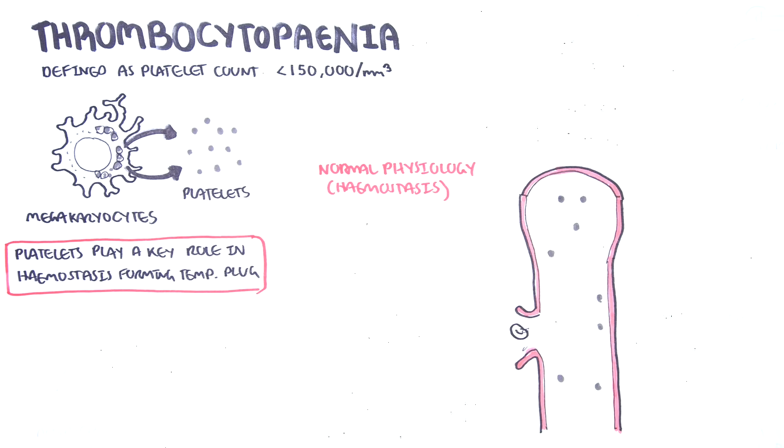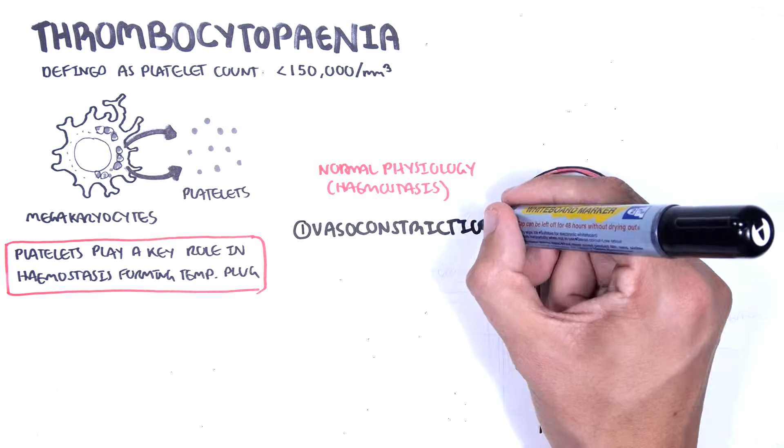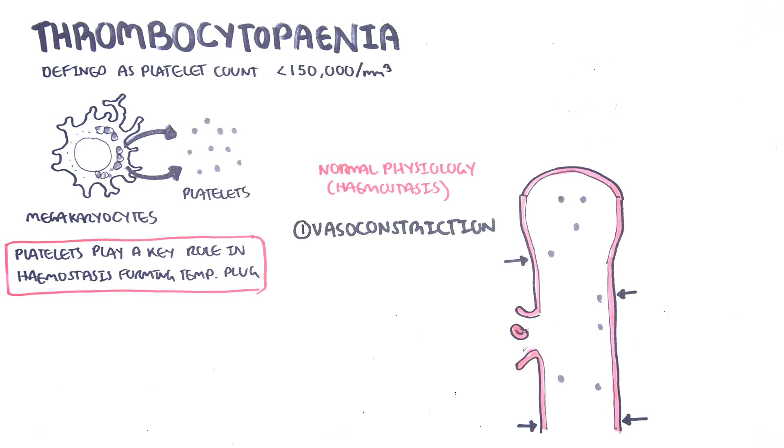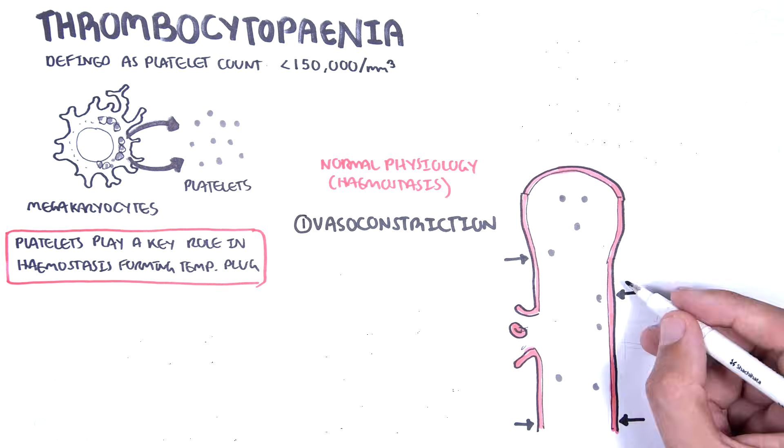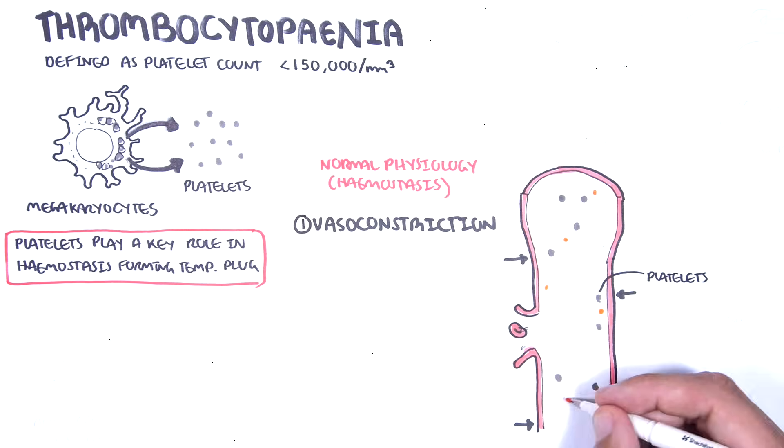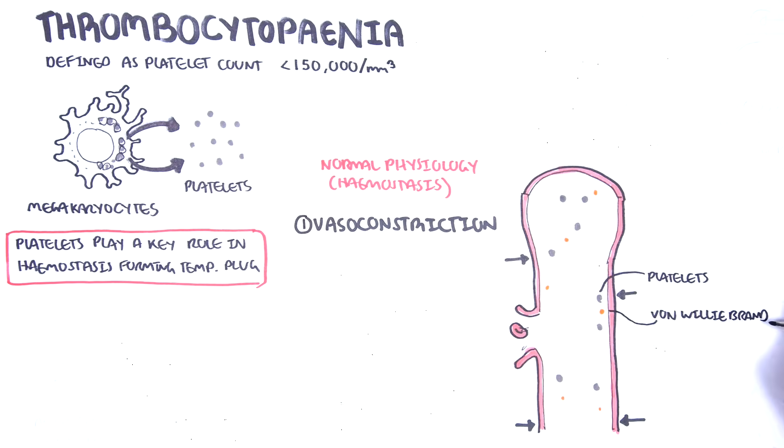When there's injury to the blood vessel, vasoconstriction occurs to reduce blood flow and therefore reduce blood loss. Platelets, red blood cells, and other clotting factors, including von Willebrand factors, are circulating in the blood.